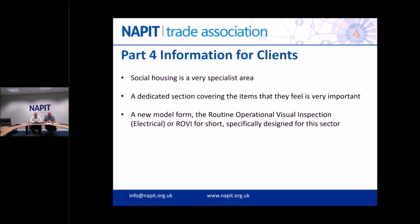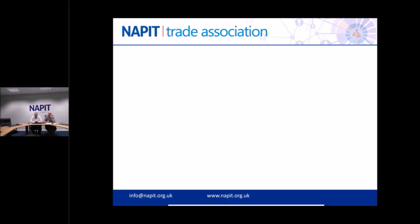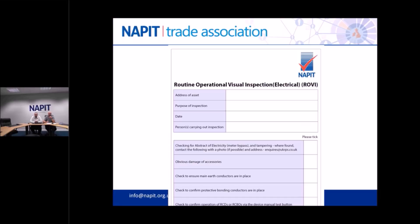Social housing is a very specialist area, so there's dedicated advice on that in the new edition of the Code Breaker. There's also a new model form for routine operational visual inspections specifically designed for the social housing sector. This allows visual inspections to be carried out between EICRs to identify any obvious damage or anything that needs to be addressed - it's all covered in these forms.